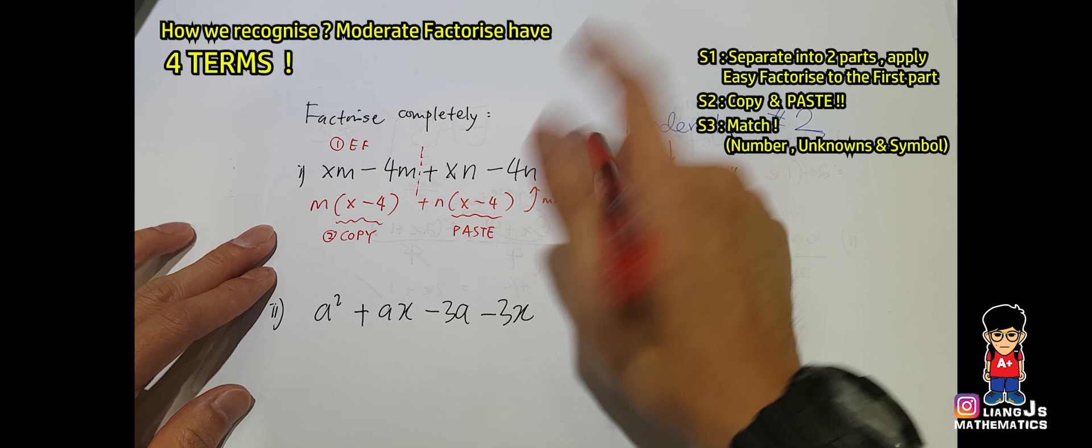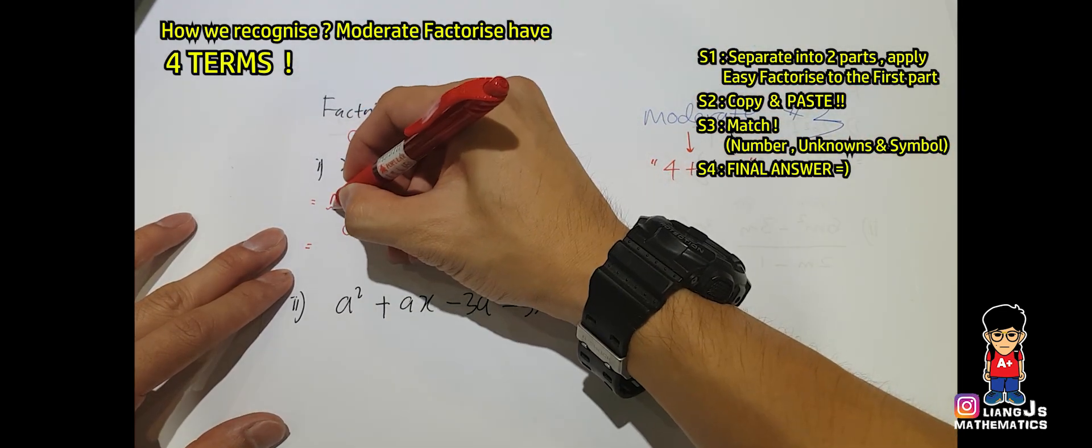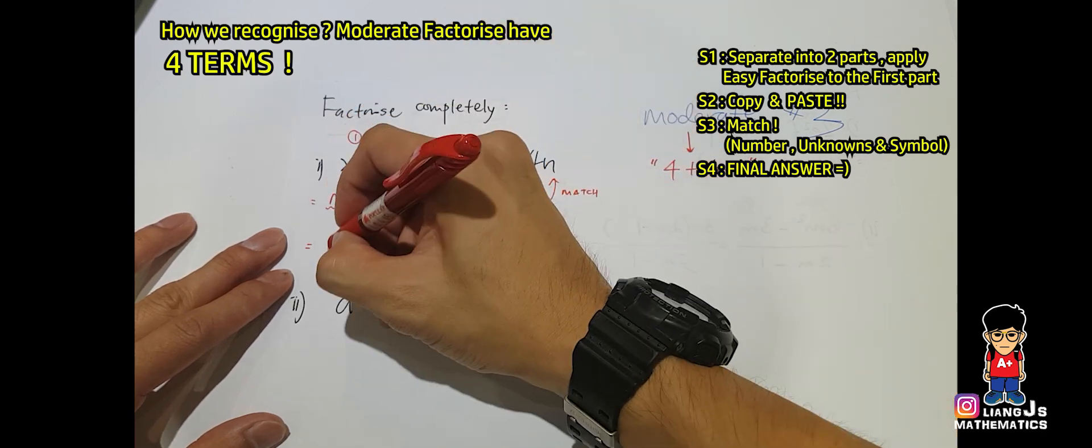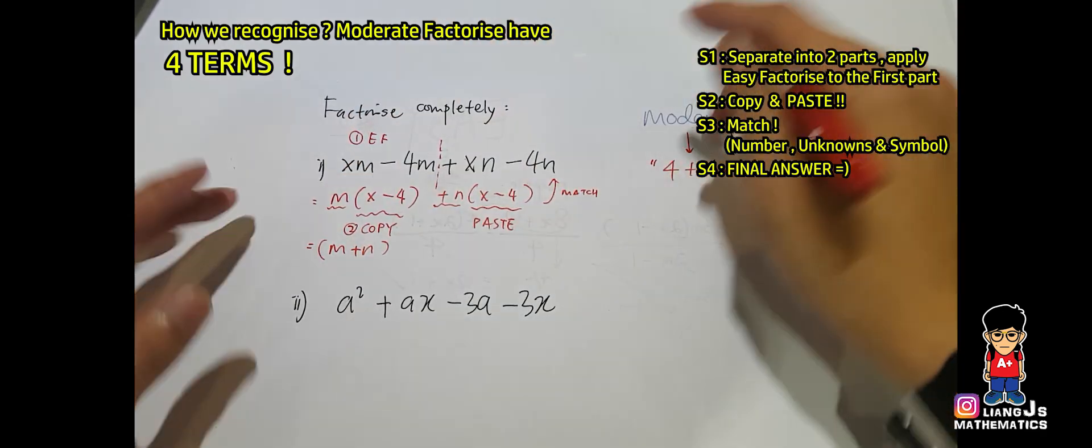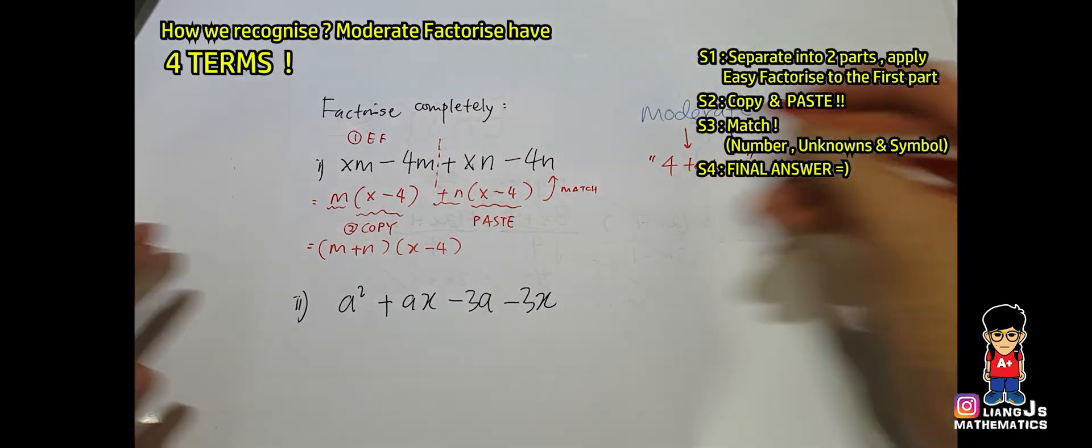So now once you get this one, too bad it's not your final answer yet. In order to get a final answer, the leftover outside becomes the first bracket, and the repeat one becomes the next one.